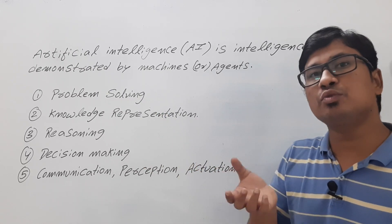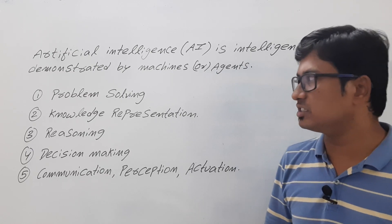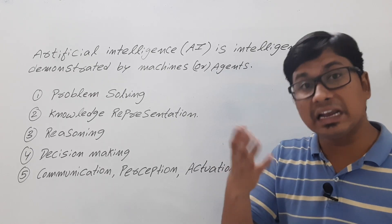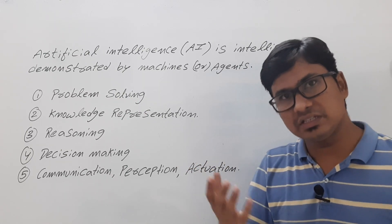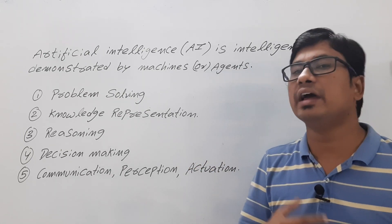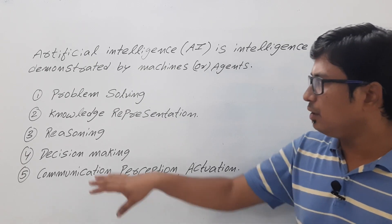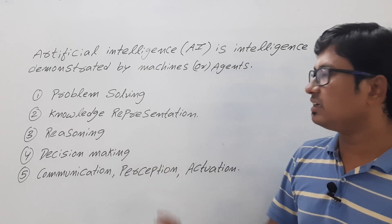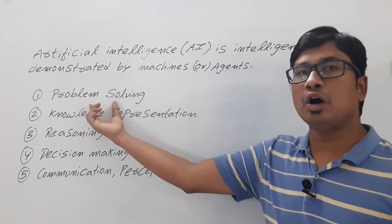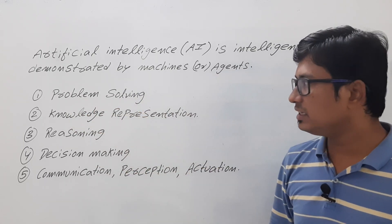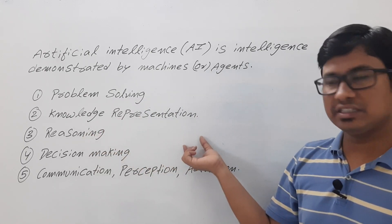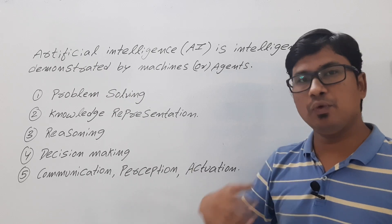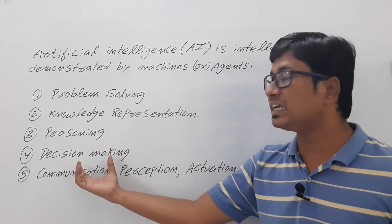So what are the tasks we perform in artificial intelligence? In data science we perform tasks such as collecting data, storing data, processing data, describing data, and modeling data. Coming to artificial intelligence, we design an agent to solve problems — so we do problem solving, knowledge representation, reasoning, and decision making. We want to design an agent that can take decisions.